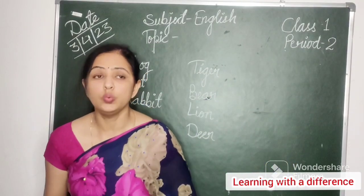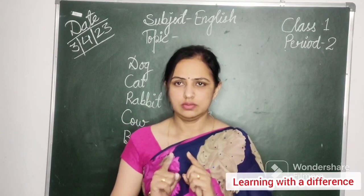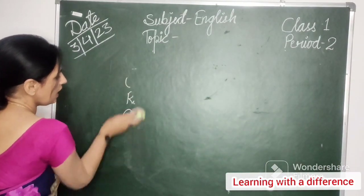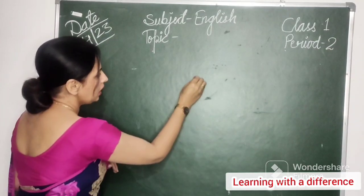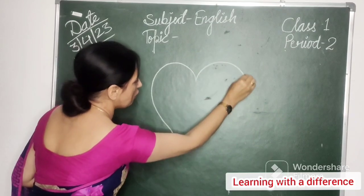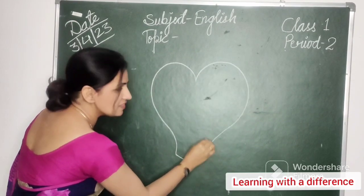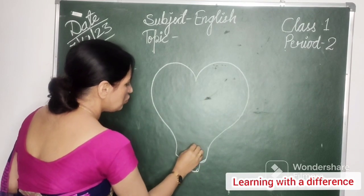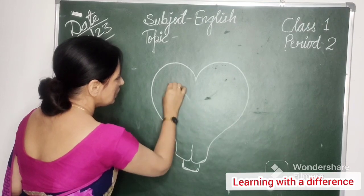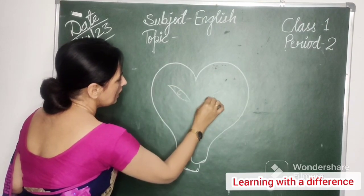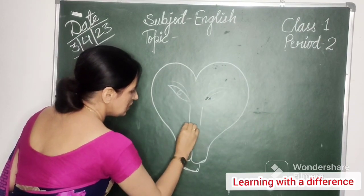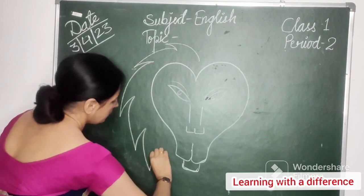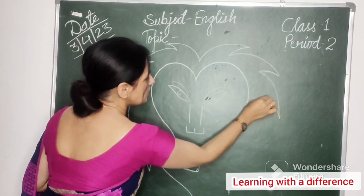Now tell me, which animal is known as the king of the forest? Kis janwar ko jungle ka raja kaha jata hai? It is the lion — very good. So you all know which animal is known as the king of the forest. Look at this carefully — it is a picture of a lion. This animal is known as king of the forest.